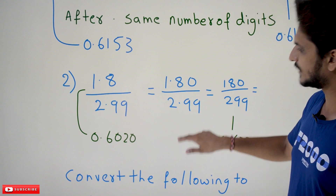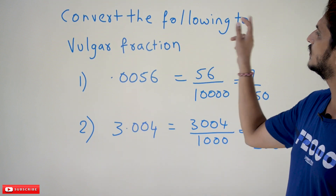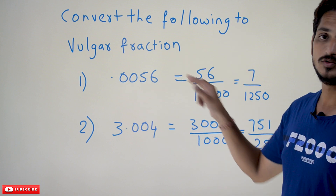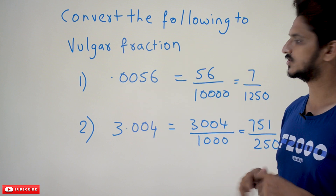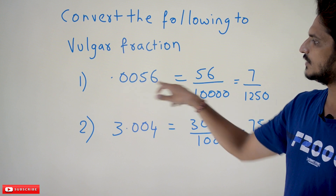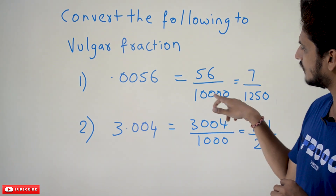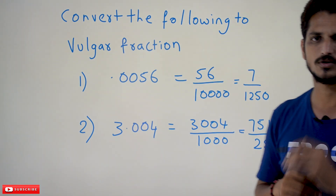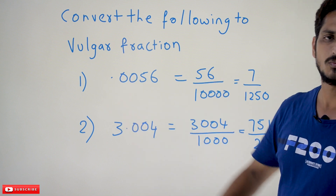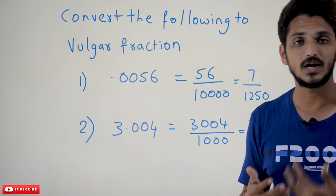Now some practice examples. Convert 0.0056 to a vulgar fraction. After the dot there are four digits, so we write 1 followed by four zeros in the denominator — 10,000. Removing the decimal point from 0.0056 gives the numerator 56. So 0.0056 = 56/10,000.